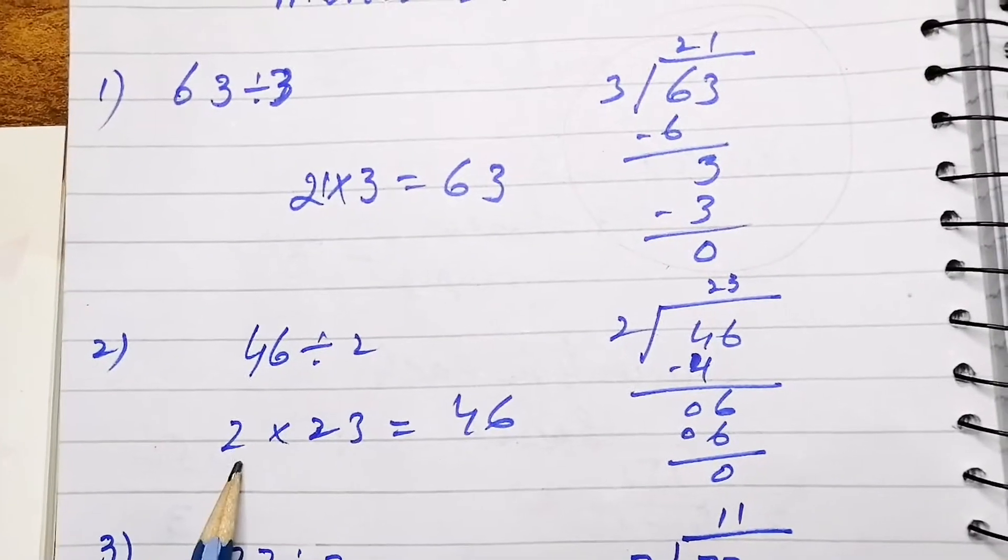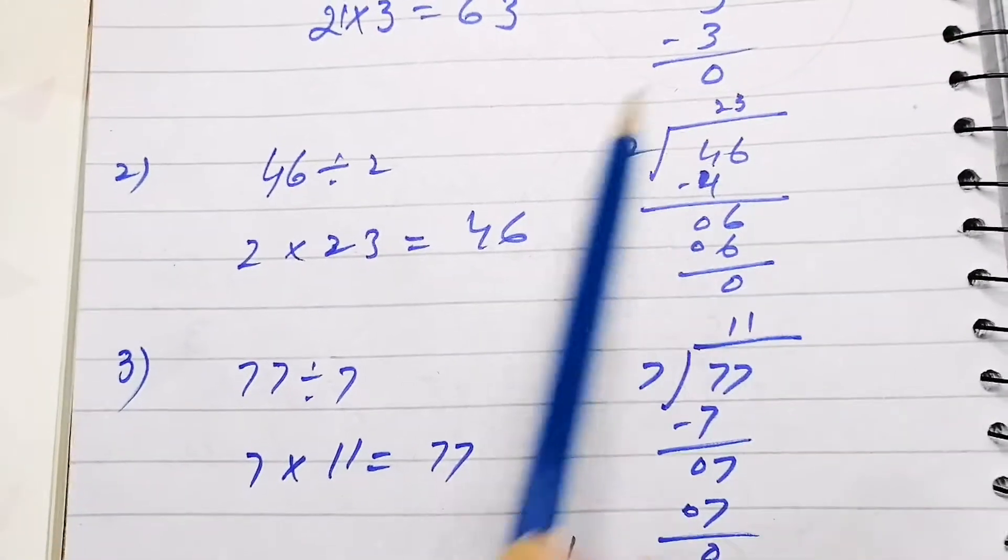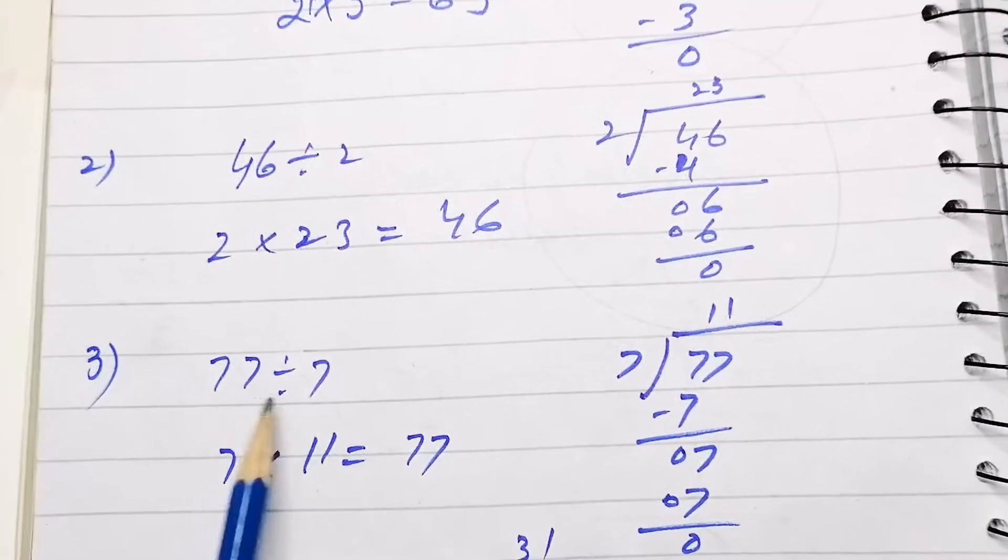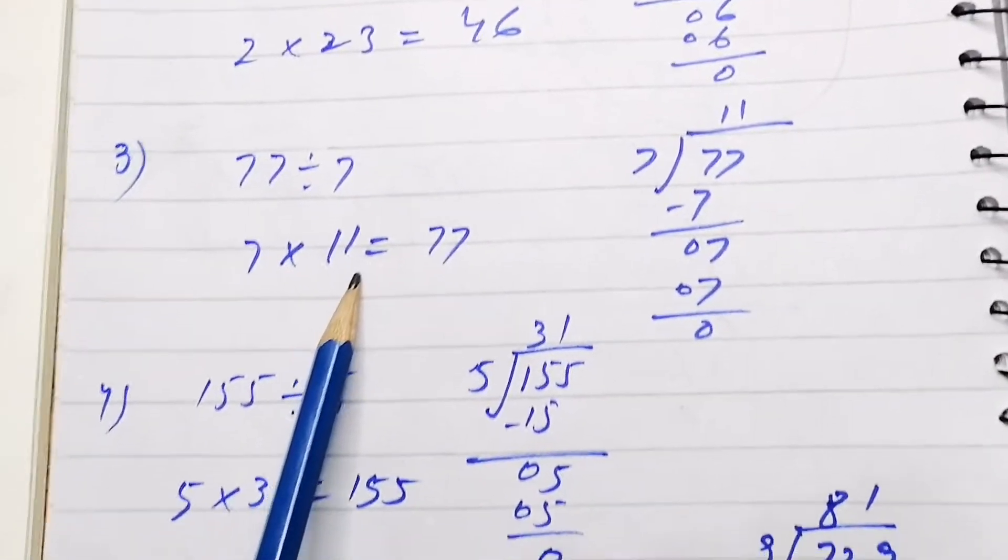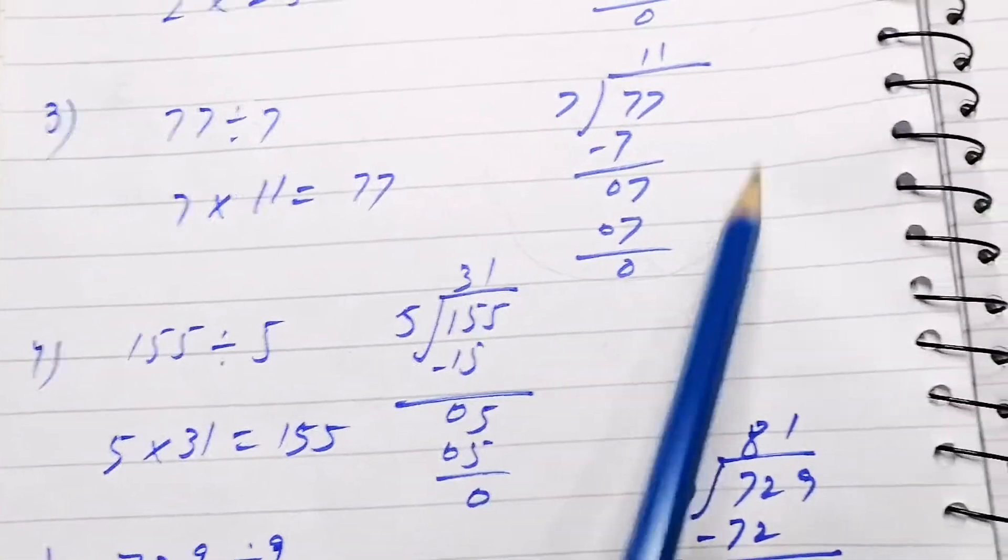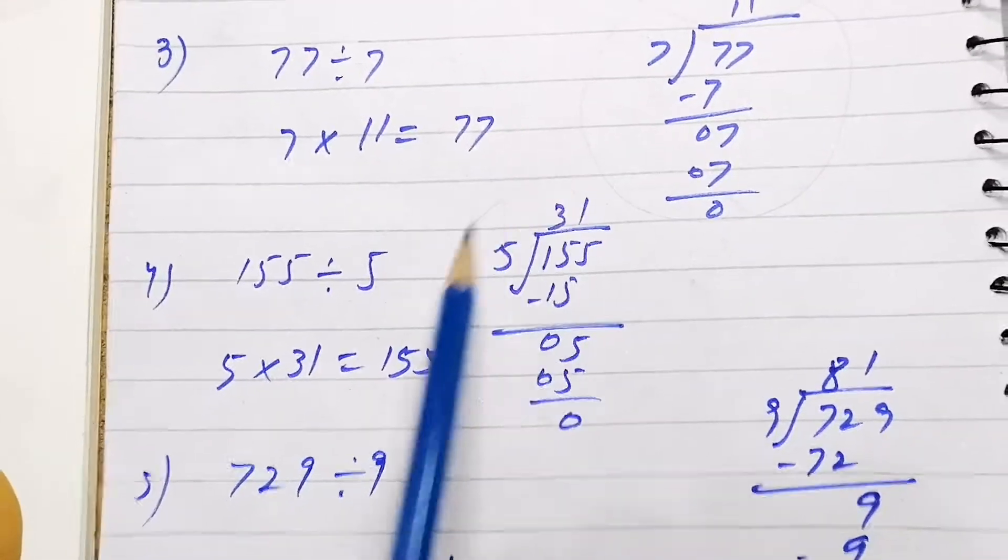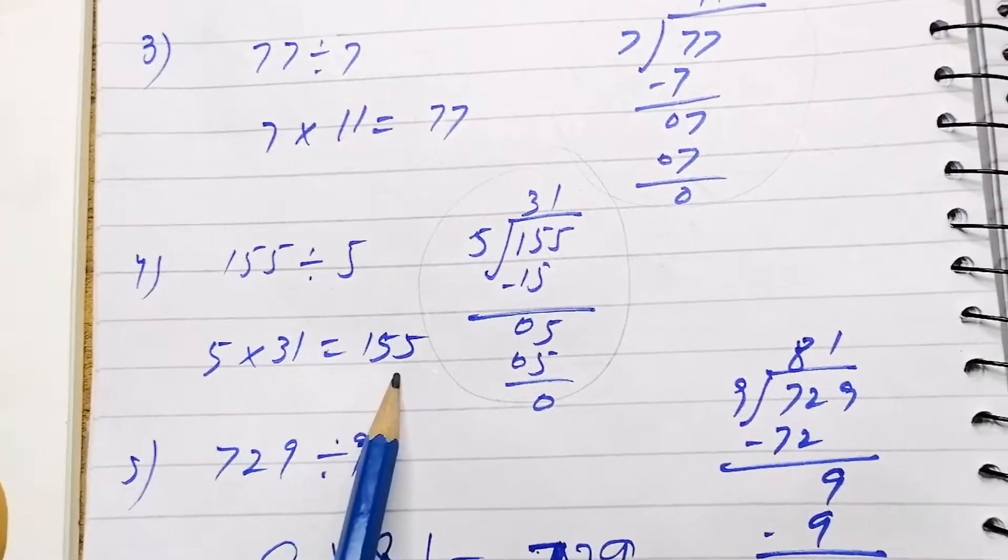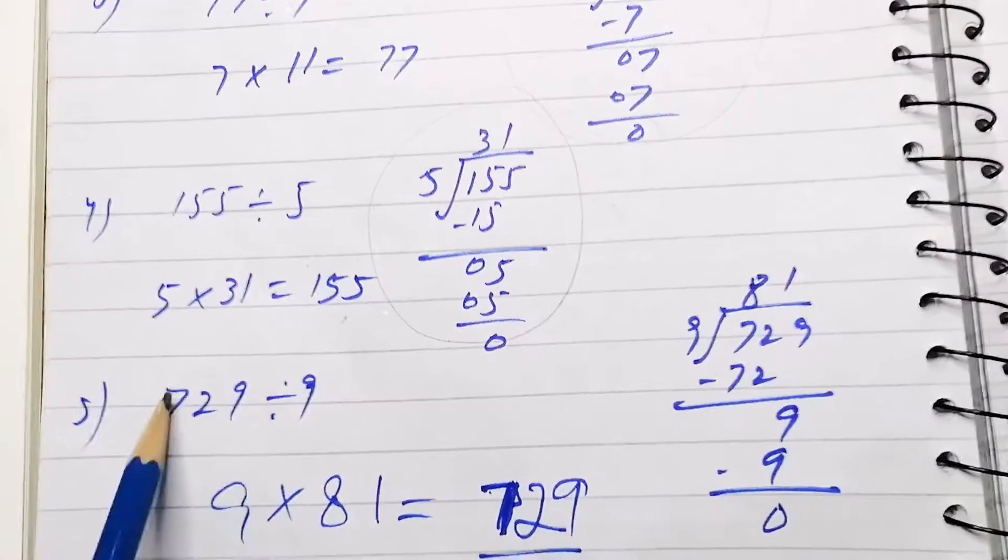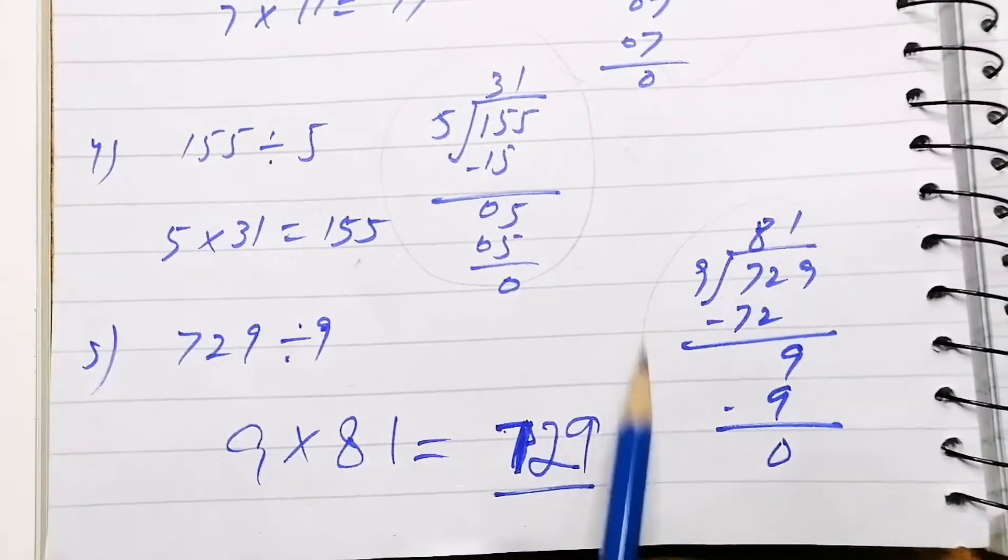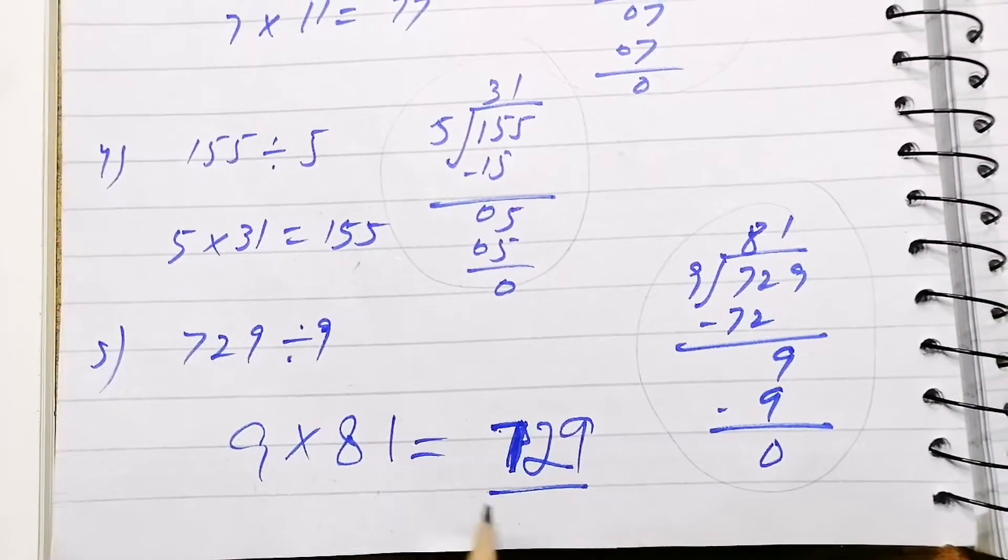46 divided by 2: 2 23s are 46. This is a mental method I have done. 77 divided by 7, so 11 7s are 77. 200 divided by 5, so 5 40s are 200. 81 divided by 9, so 9 9s are 81.